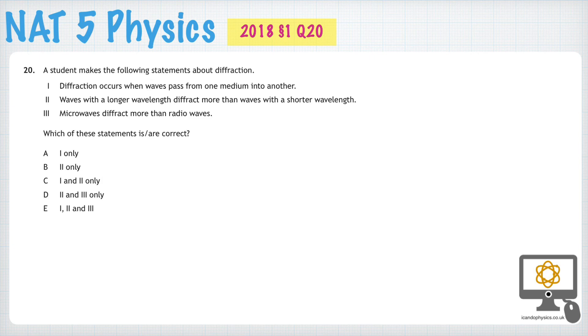First one, diffraction occurs when waves pass from one medium to another. Now that is not the case, that would be refraction, when a wave passes from air into glass or air into water. Whereas diffraction is about whenever waves travel through a gap or around an object. So that's not correct.